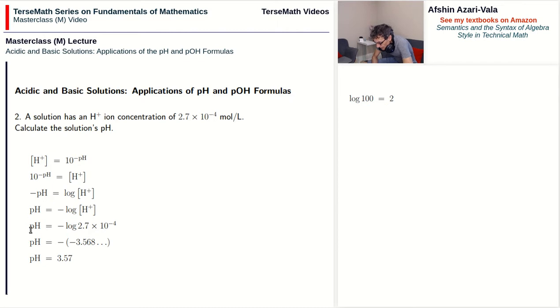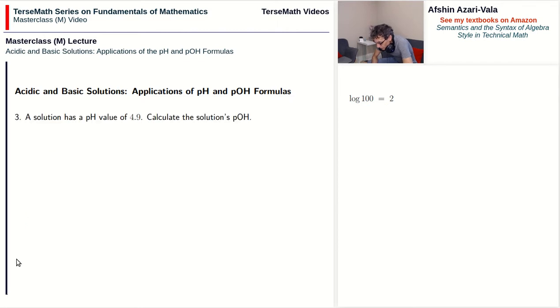And the last problem for this video: a solution has a pH value of 4.9, calculate the solution's pOH. Now this one is pretty easy because the formula is probably the simplest formula type that you can see. It's pH plus pOH is equal to 14. Solving this for pOH gives me 14 minus pH. We now replace pH with its given value 4.9, and we end up with pOH is equal to 9.1.